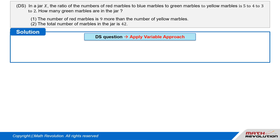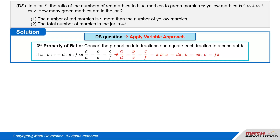Solution. Let's solve this D.S. question using the variable approach. Third property of ratios — ratio becomes formula. Convert the proportion into fractions and equate each fraction to a constant K. If A to B to C equals D to E to F, or A/D = B/E = C/F, then A/D = B/E = C/F = K, or A = D·K, B = E·K, and C = F·K.